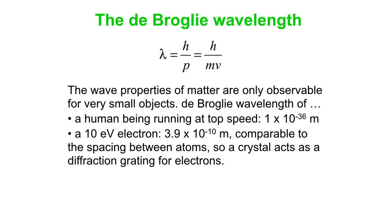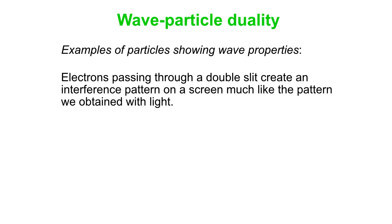And so a crystal, a regular array of atoms, can act as a diffraction grating for electrons. That's kind of interesting. Do we have any examples of particles showing wave properties? Well, yes we do. You can actually fire electrons at a double slit and create an interference pattern on a screen, much like the pattern we obtained with light. It's kind of amazing.